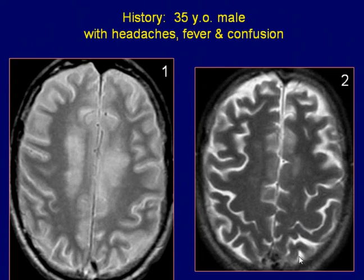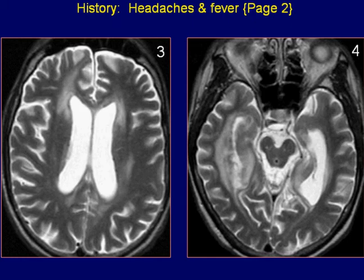35-year-old male with headaches, fever, and confusion. Axial proton density and T2-weighted images of the brain reveal diffuse bilateral hyperintense white matter lesions. Axial T2-weighted images at a more caudal level demonstrate again diffuse white matter lesions on both sides of the brain.